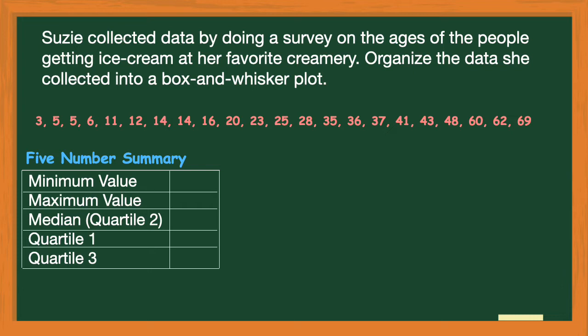Let's start by finding the minimum value, which is the smallest value in my data set. If I look all the way to the left, I see that number is three — so the youngest person was three. The maximum value, which is the largest value, is all the way to the right at 69 — so the oldest person was 69.